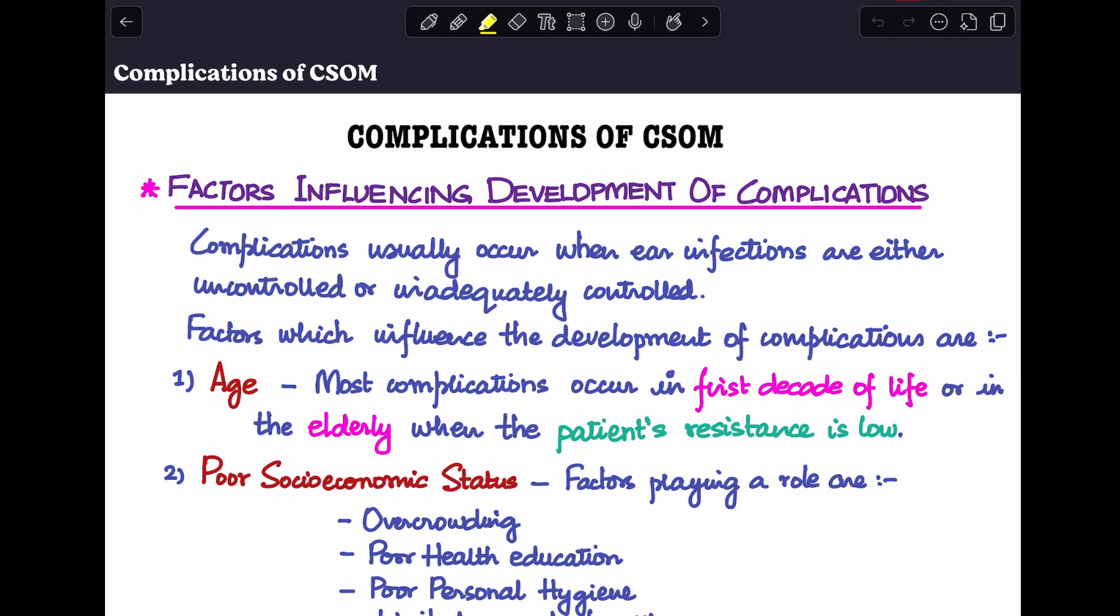Okay, so let's get started. Now there's a lot of complications in CSOM that we need to know about, but before we know what is the classification of the complications of CSOM, let's first know a few factors. What are some factors which influence the development of complications? Because not every case of CSOM ends up in a complication, so there must be some particular factors in certain people which end up being risk factors towards the development of complications.